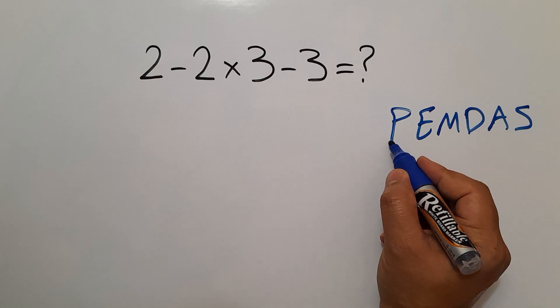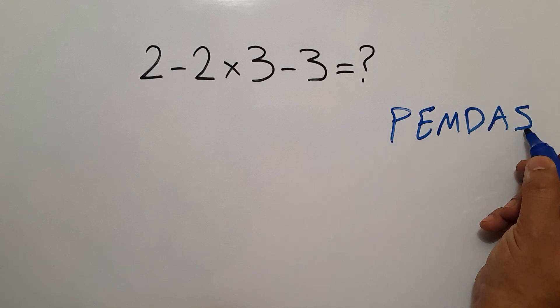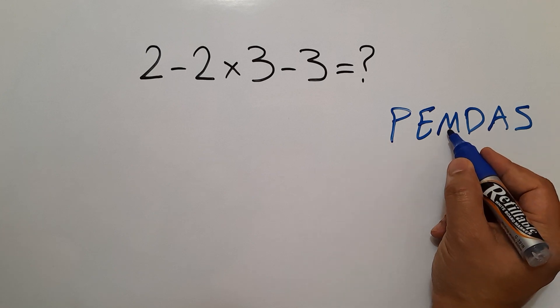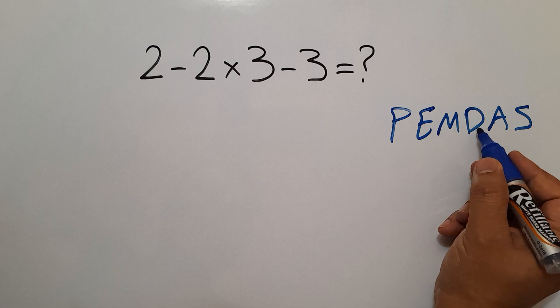We first do parentheses, then exponent, then multiplication and division, and finally addition and subtraction. Remember that multiplication and division have equal priority and we work from left to right.